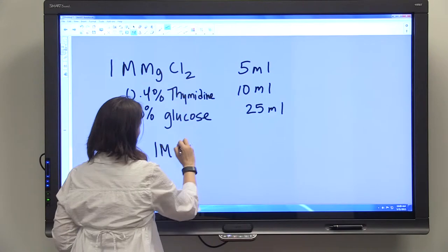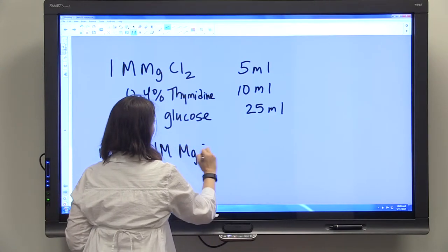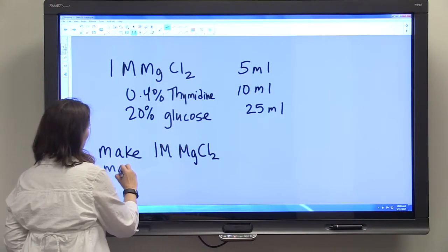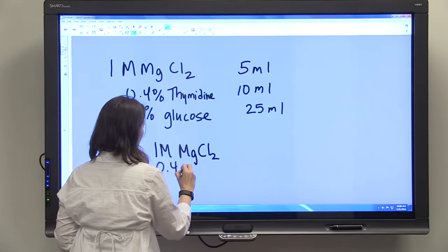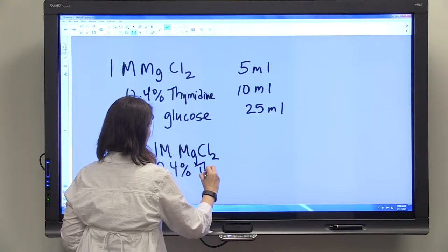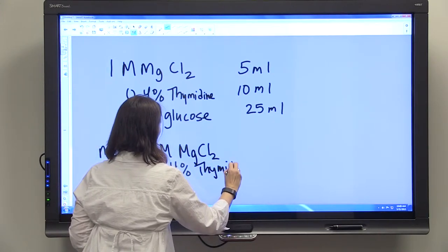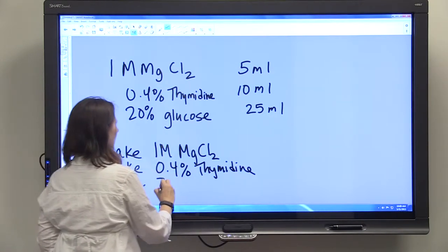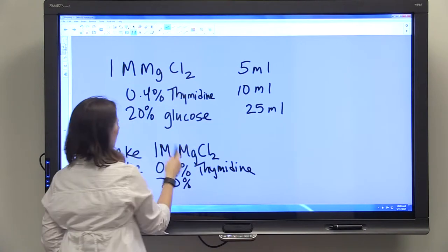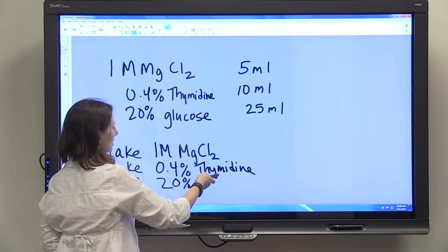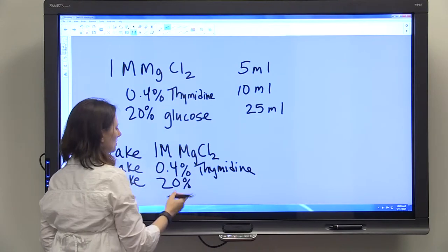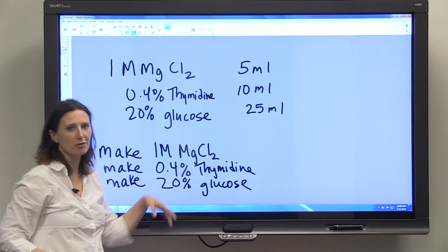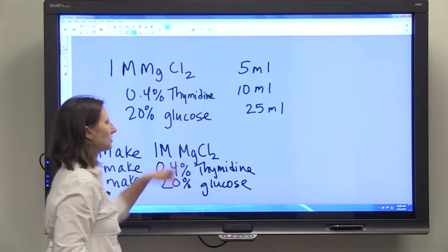In order to do that, you would have to make 1 molar magnesium chloride, 5 ml. You'd have to make 0.4% thymidine and 20% glucose. Then you could take 5 ml of 1 molar magnesium chloride, 10 ml of the thymidine, and 25 ml of the glucose and add them together to have your final solution.